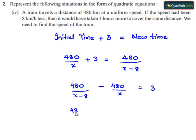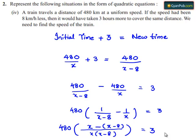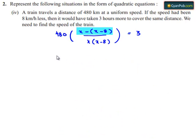Rearranging, we get 480 divided by x minus 8, minus 480 divided by x, equals 3. Taking 480 as common: 480 times (1 over x minus 8, minus 1 over x) equals 3. The LCM of the denominators is x times x minus 8, giving 480 times 8, divided by x(x minus 8), equals 3.